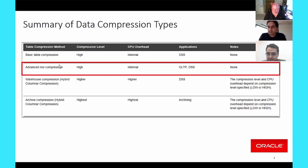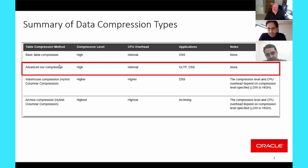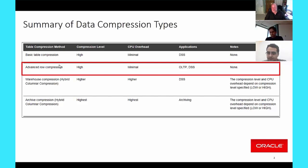Does advanced row compression work with Oracle encryption? Yes, they work very well together. You want to use tablespace encryption, not column encryption. If you use tablespace encryption, we will compress before encrypting, so you get the best compression possible. If you use column encryption, the data is encrypted first and then we compress, which affects the compression ratio. We have quite a number of customers who use both together—just remember to use tablespace encryption, not column encryption.